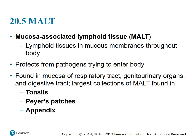Section 20.5: MALT — mucosa-associated lymphoid tissue. These are lymphoid tissues in the mucous membranes throughout the body that protect from pathogens trying to enter the body. MALT is found in the mucosa of the respiratory tract, genitourinary organs, and digestive tract. The largest collections of MALT are found in the tonsils, Peyer's patches, and the appendix.